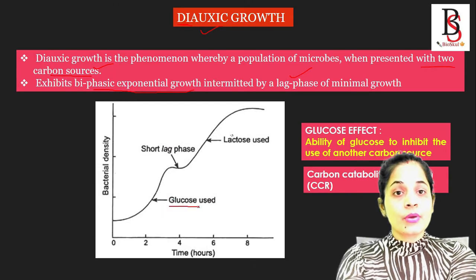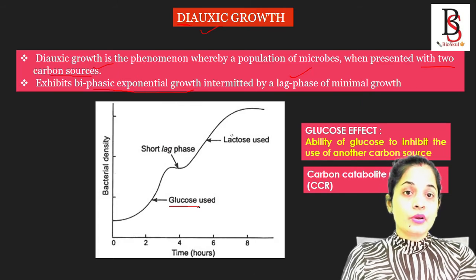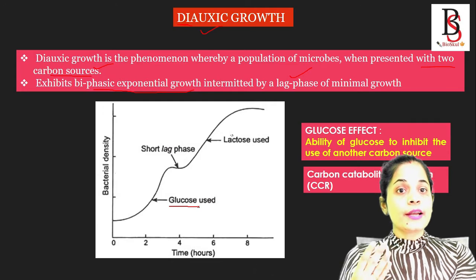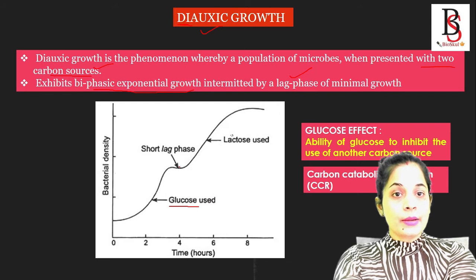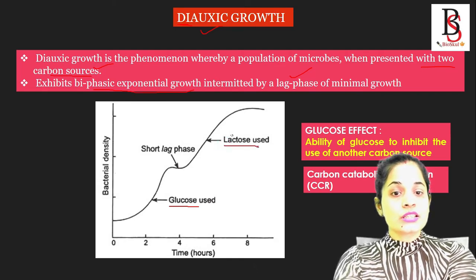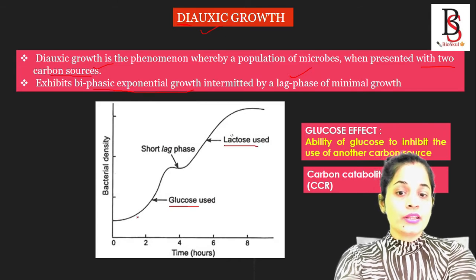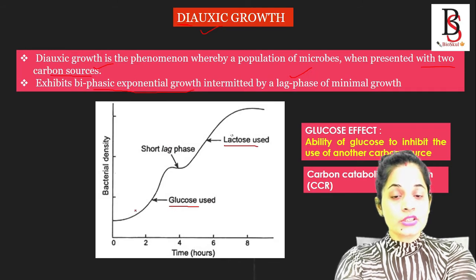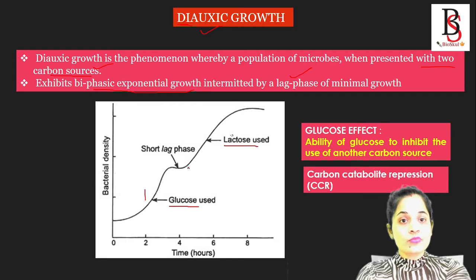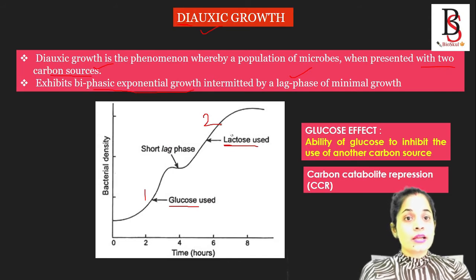First, the bacteria will use one carbon source — that is glucose — because if glucose is present in the media, E. coli will first use the glucose. It is the preferred nutrient for E. coli and it consumes the preferred carbon source at a faster rate. Then there is a lag period, during which the bacteria synthesize the enzymes to metabolize the second carbon source, which is lactose. So when bacteria start to use the first carbon source at a faster rate, one exponential phase forms. Then after a lag phase — during which it synthesizes the enzymes required for catabolism of the second carbon source — it starts to utilize the second carbon source, lactose, thereby producing the second exponential phase.